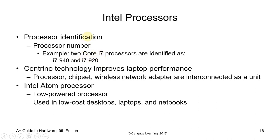For Intel processor identification, two Core i7 processors are identified as i7-940 and i7-920. Centrino technology improves laptop performance — processor, chipset, and wireless network adapter are interconnected as a unit. The Intel Atom processor is a low-powered processor used in low-cost desktops, laptops, and netbooks — it became popular because of netbooks as a smaller, lower-cost version of Intel processors.